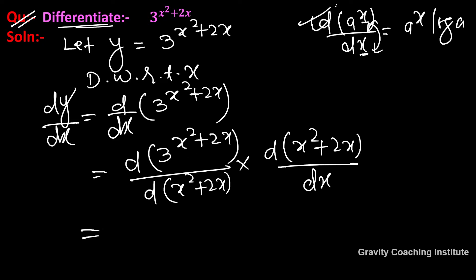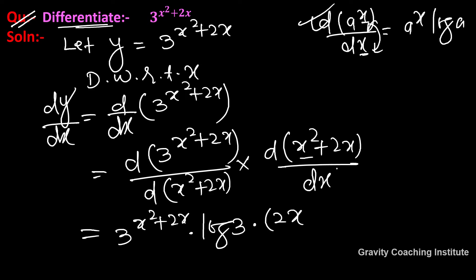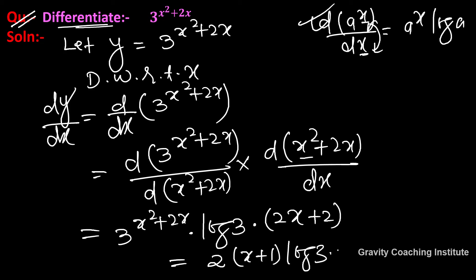This gives 3 to the power x squared plus 2x, multiplied by log 3, multiplied by (2x plus 2), into 3 to the power x squared plus 2x, which is the required answer.